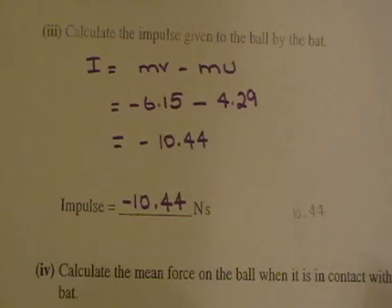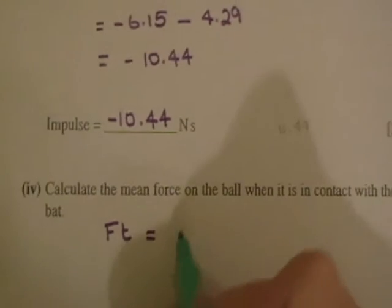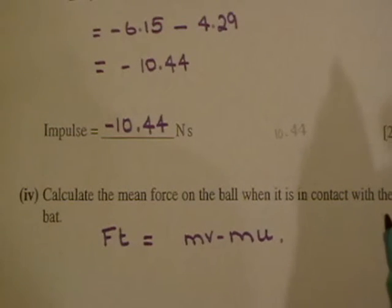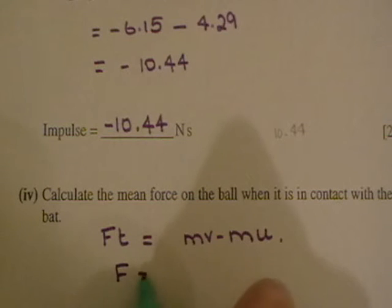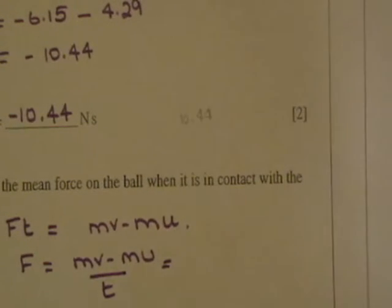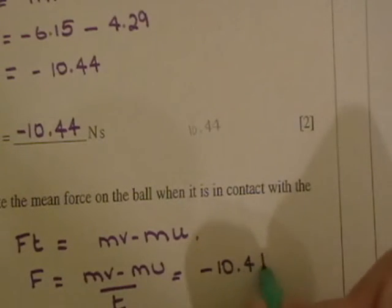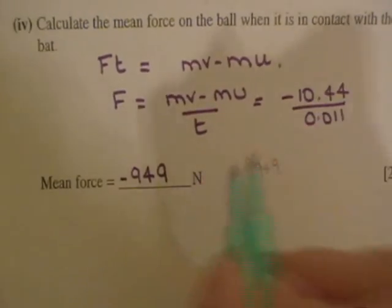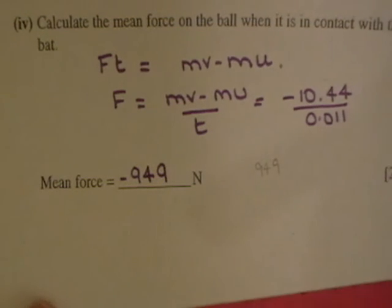Calculate the mean force on the ball when it is in contact with the bat. The change of momentum equals impulse, so F·t = mv − mu. Treating the force as negative, the change of momentum is minus 10.44, and the contact time is 0.011 seconds. Doing that calculation gives approximately 949 N. The sign depends on your convention — they won't penalise you either way.